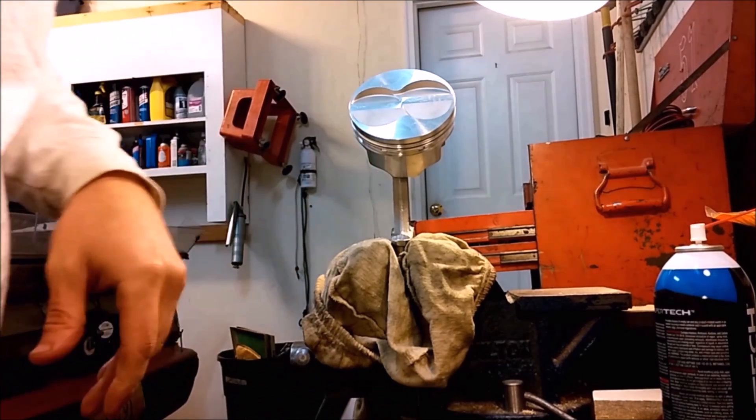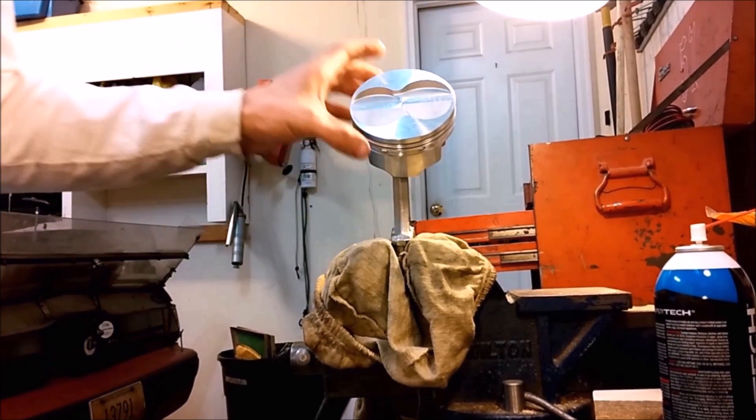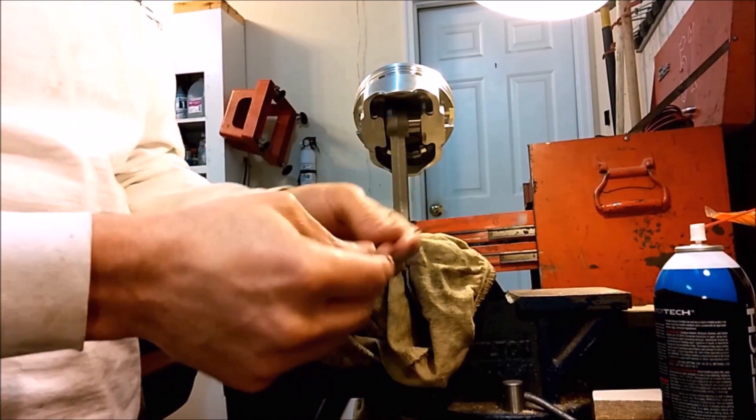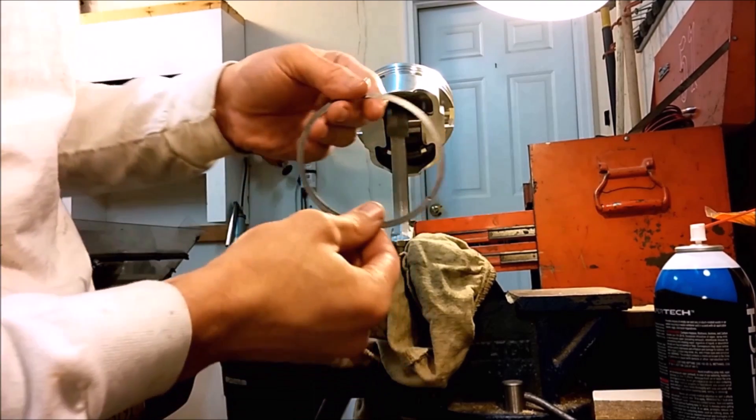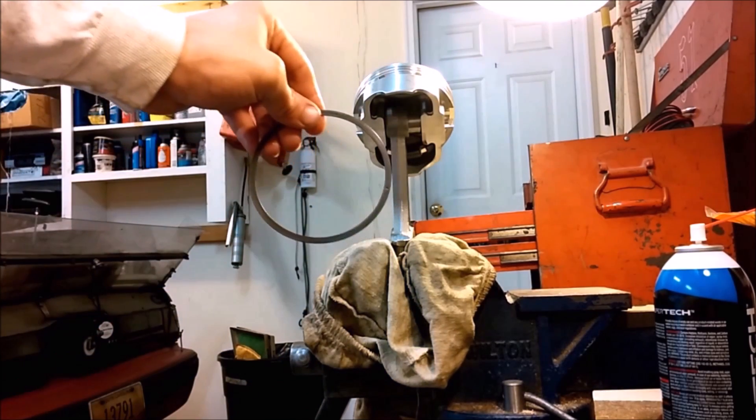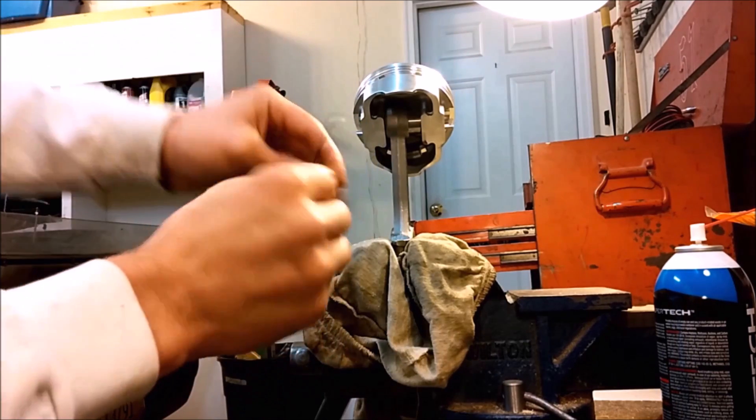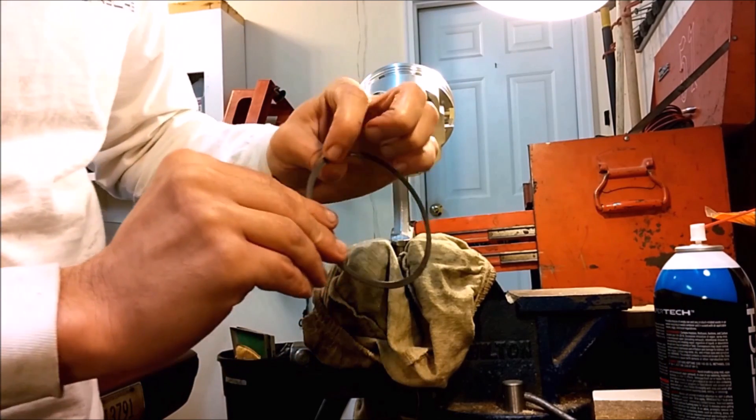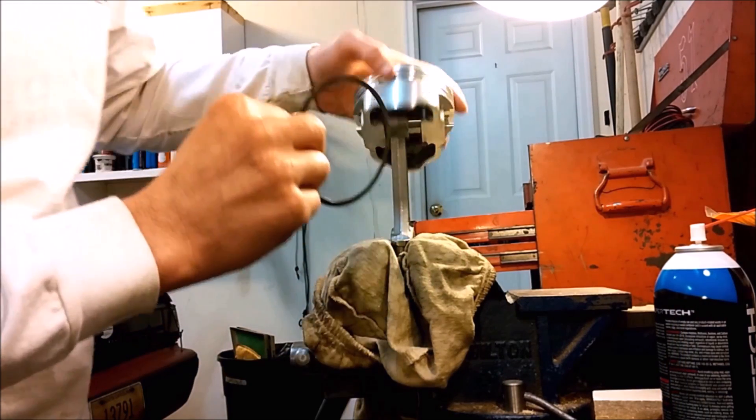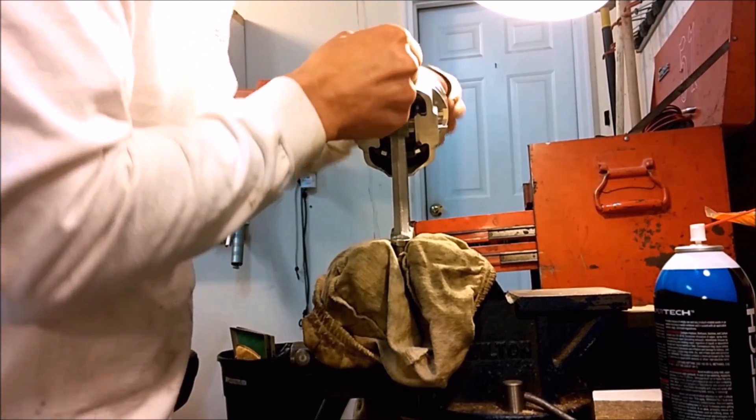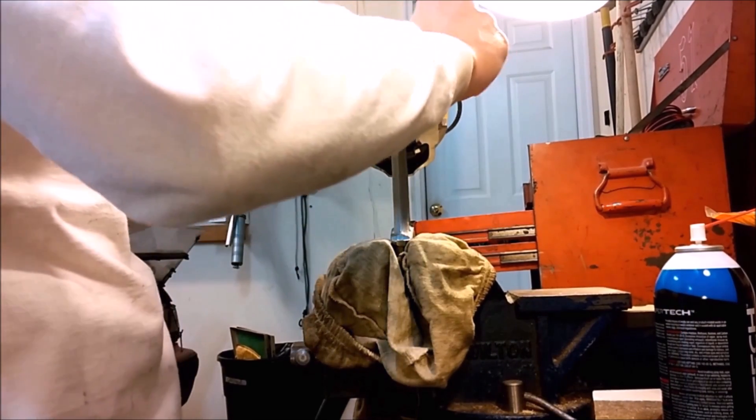Now again, this is 347 specific parts. We need to install the spacer ring. It has a dot on it. Make sure that you guys can see that. There's a dot, a dimple really I should call it. And the dimple needs to go down into the space. That keeps this spacer ring from rotating around.